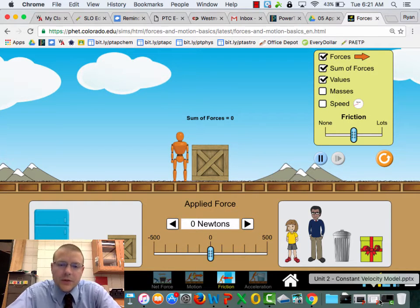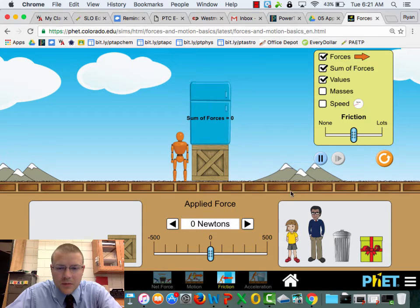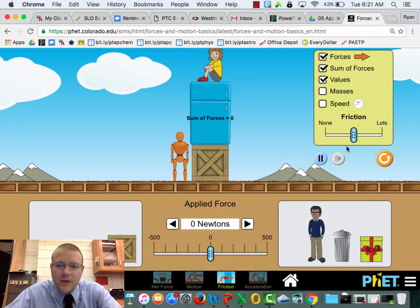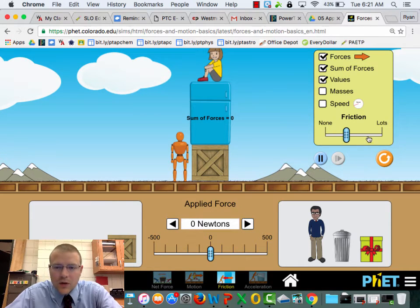First thing I want to show you is this simulation. In the simulation here, you've got a box. I could put a fridge on top of the box, I could put a child on top of that fridge. Not a very safe thing to do, but nonetheless we have the force of friction here that we can control. We can go to none, where that means the surface is perfectly smooth, or we can go all the way to lots. You can see how rough the surface gets.